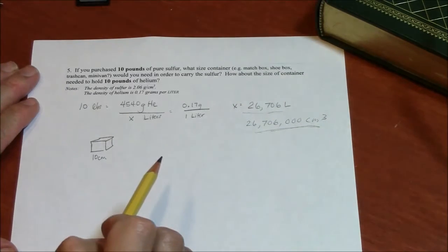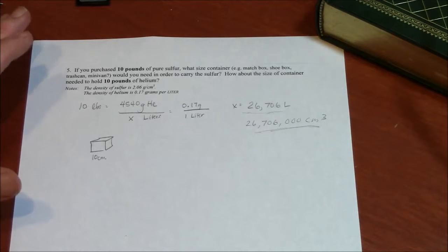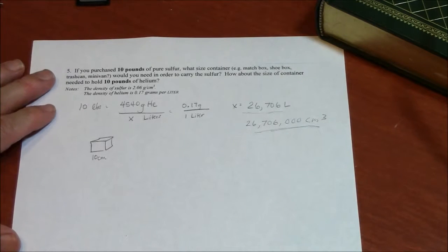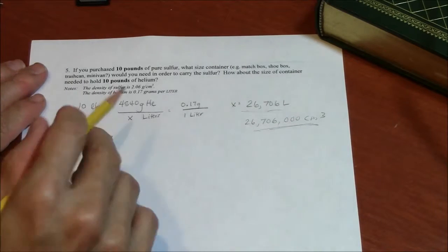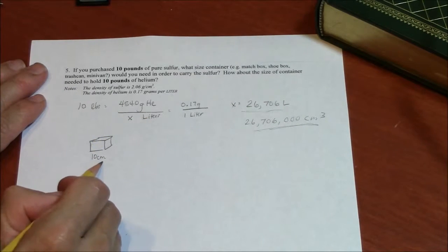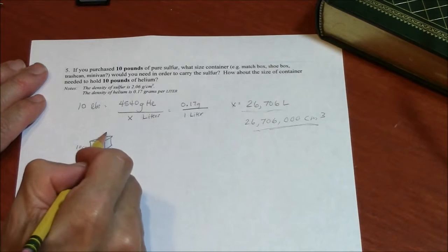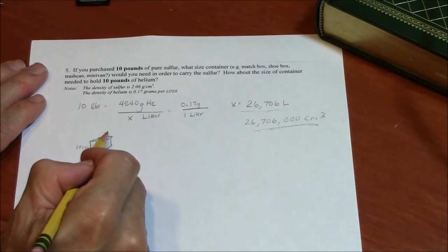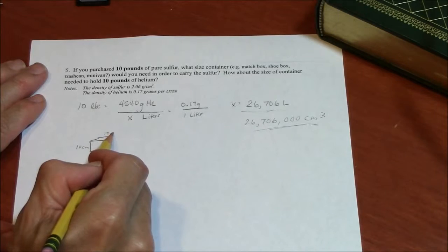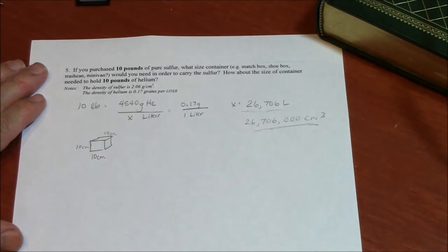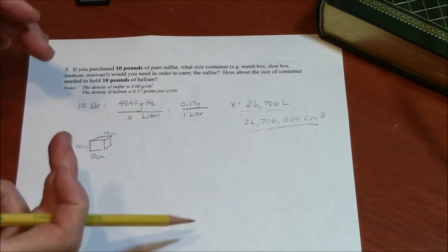Some students invented a unit of measurement called the kiloliter, which actually is very useful, but we need to visualize it. So a liter is 10 centimeters. It's a 10 centimeter cube. So if you had 10 centimeters by 10 centimeters by 10 centimeters, you've seen me carry that box around. That's a liter.